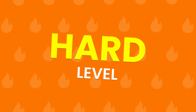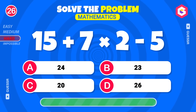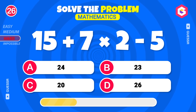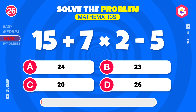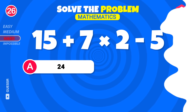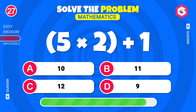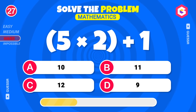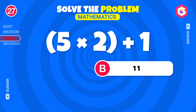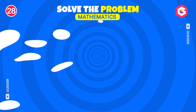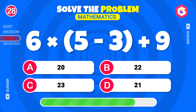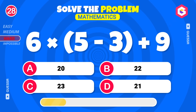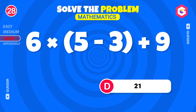Hard Level. What's 15 plus 7 into 2 minus 5? Yes! It's 24! Try solving this one! It's 11! Multiply 6 into 5 minus 3, then add 9! 21 is the correct answer!